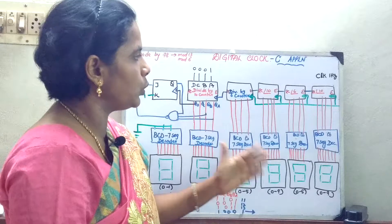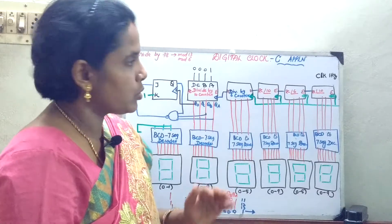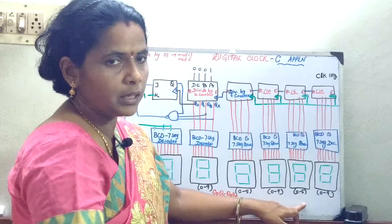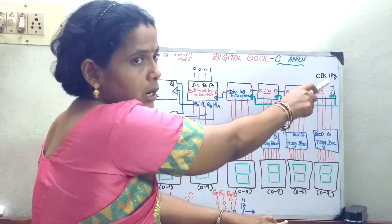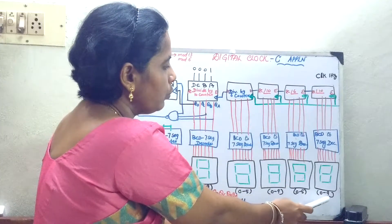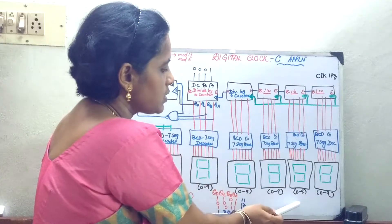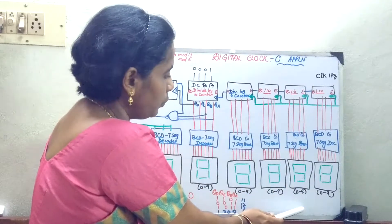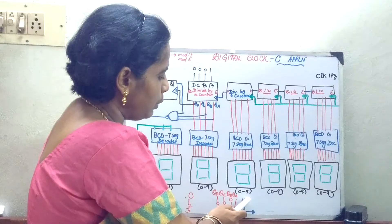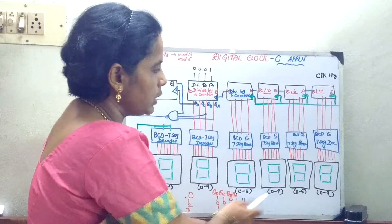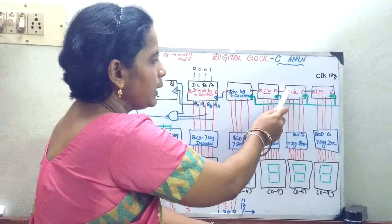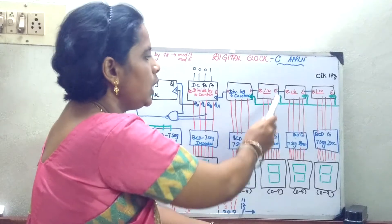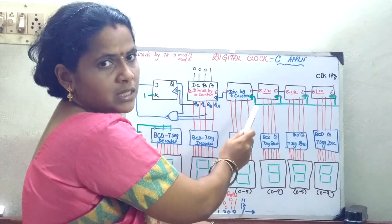Now we will move on to the working of it. Whenever I am going to give a clock frequency of 1 Hz, with this mod-60 counter I am going to count the seconds from 0 to 59. Similarly, here I will be able to count the minutes, and whatever the ripple carry data from the seconds side, it will go on to the minutes counter for counting.